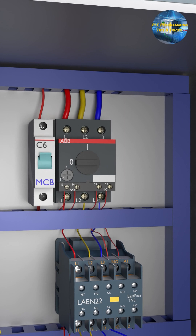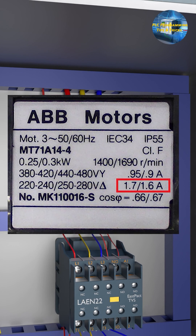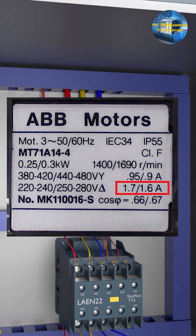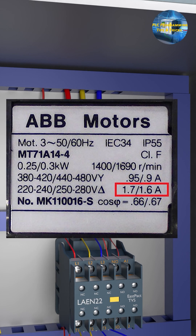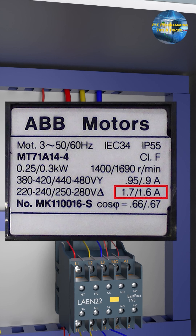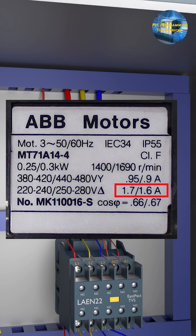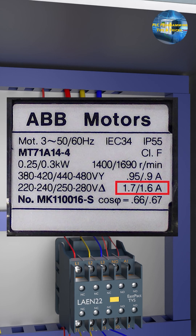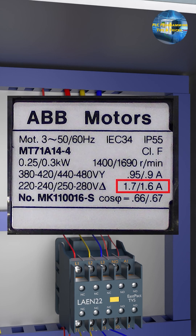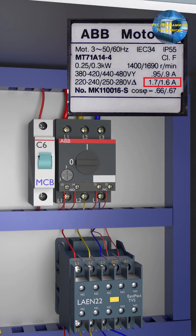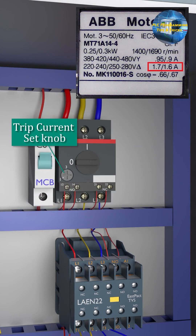Now that the motor is tripped, first we can check the motor nameplate and check the rated amps of the motor. We have to confirm that the tripping limit in the motor protector breaker is set as per the motor nameplate. In our case, you can see that the motor rated current is 1.6 amps, so we can set the current limit by rotating this knob using a screwdriver.